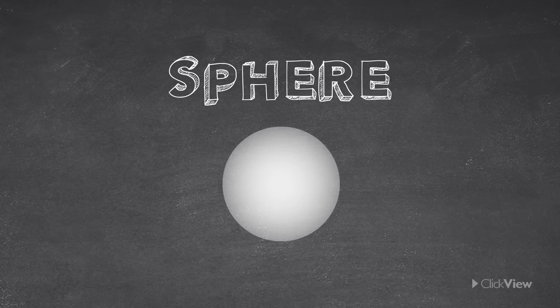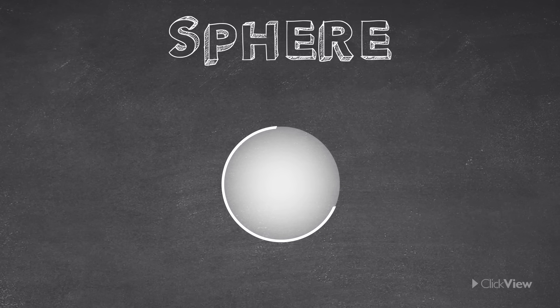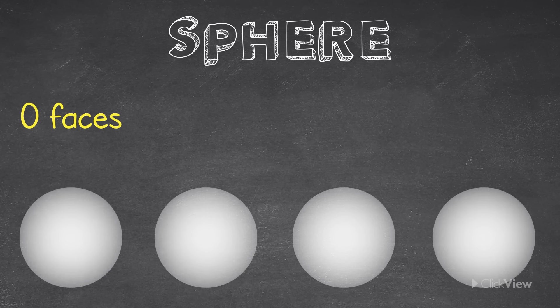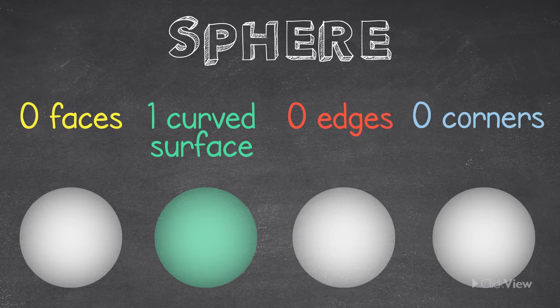This unique shape is a sphere. It's perfectly round, just like a ball. This means it has no flat faces, no edges, and no corners. Just 1 curved surface. How unique is that?